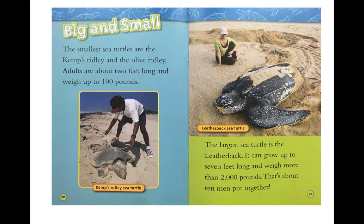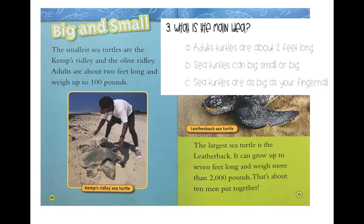Big and small: the smallest sea turtles are the Kemp's ridley and the olive ridley — adults are about 2 feet long and weigh up to 100 pounds. The largest sea turtle is the leatherback — it can grow up to 7 feet long and weigh more than 2,000 pounds; that's about 10 men put together. Number three: what is the main idea of this page? Pause your video and write your answer.